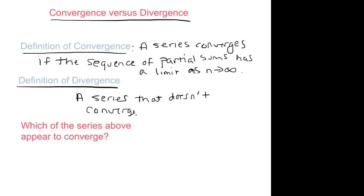And so now we ask, which of the series above appear to converge? So take again another look at the examples we did: a, b, and c. Remember, our sequence of partial sums for a was 0.1, and then it was 0.11, and then it was 0.111, right?